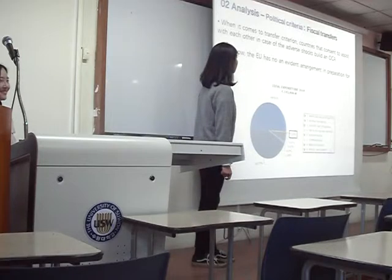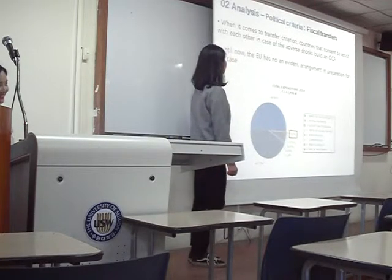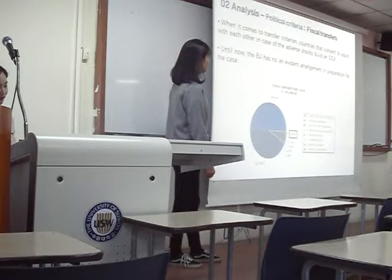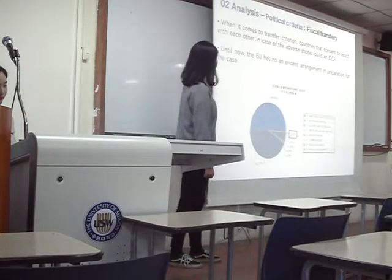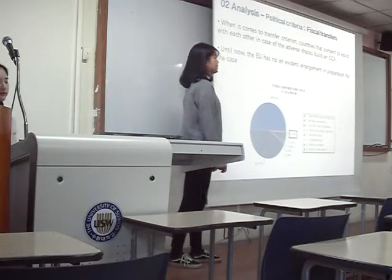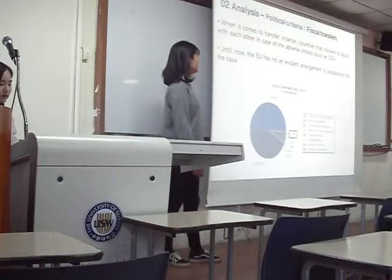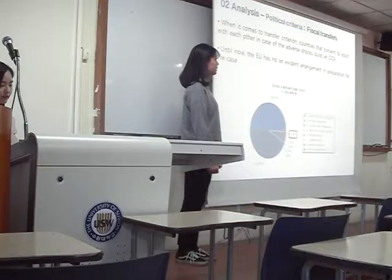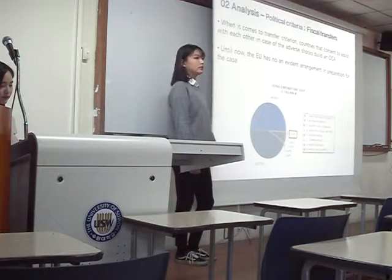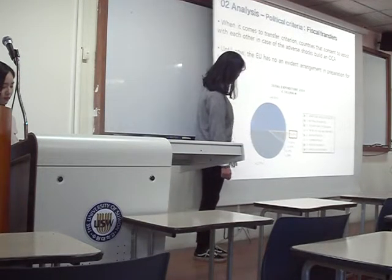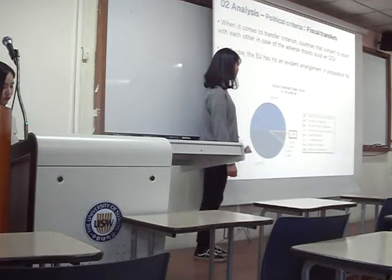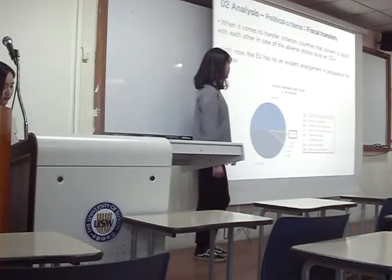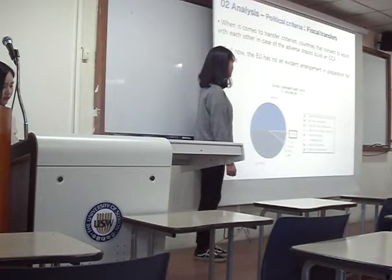I will explain the first political criterion: fiscal transfers. This concept refers to countries assisting each other in case of adverse shocks, as required by OCA theory. However, until now Europe has no evident arrangement in preparation for such cases. This chart shows that they spend only 0.3% of total expenditure of European countries as of 2014.